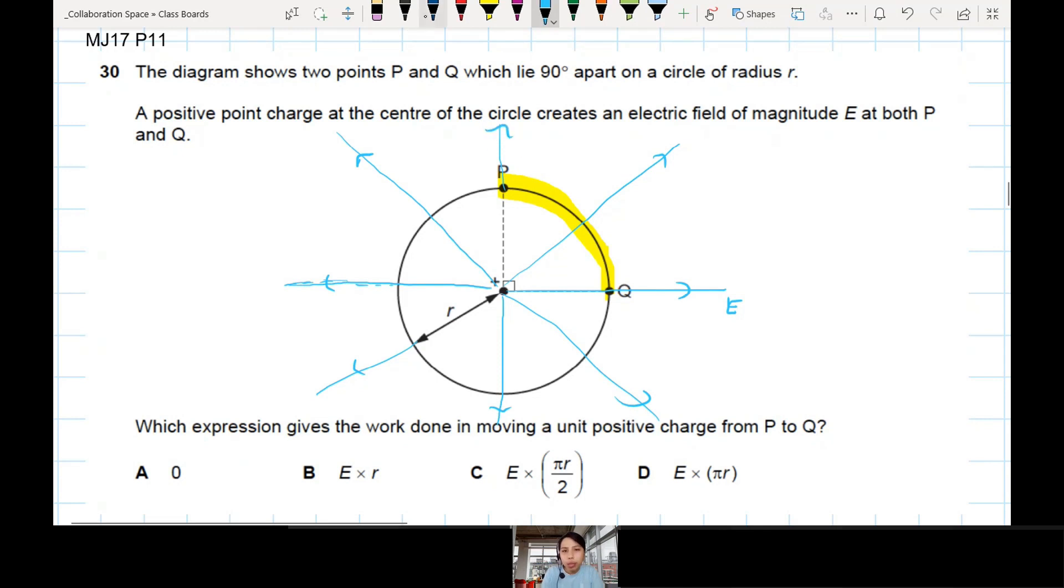If we want to find the work done, we need to know what is the Q and what's the delta V. How would we know what is any of these? What is the delta V from P to Q? They never give any information about delta V. Nothing.